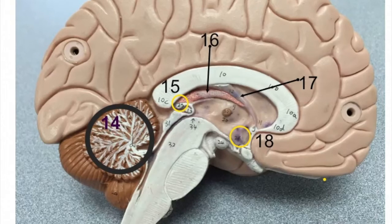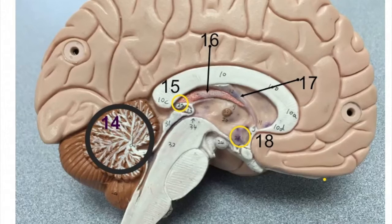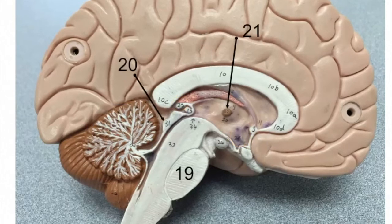Number seventeen, name this structure. Number eighteen, name this major internal structure of the diencephalon. Number nineteen, name this part of the brain stem.